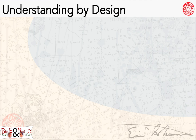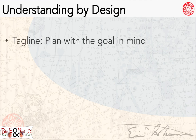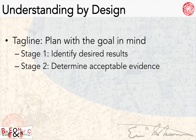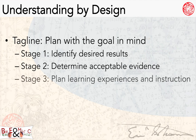The first framework is Understanding by Design. This has been given the tagline 'Plan with the Goal in Mind.' There are mainly three stages: first, you identify the desired results — standards and objectives; then you determine acceptable evidence — how will you assess the students; and the third stage is to plan the learning experiences and instruction. Understanding by Design is often called backwards design, where you think about the goal first and work backwards to the everyday learning experiences.